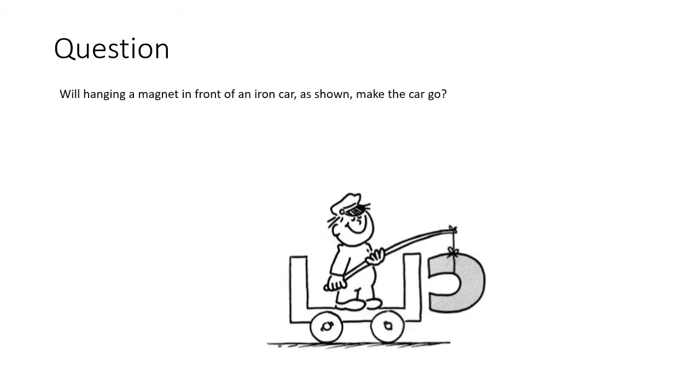Will hanging a magnet in front of an iron car, as shown, make the car go? A) Yes, it will. B) It will move if there is no friction. C) It will not go. Now you may pause this video and think what will happen and select your answer before we turn to the next slide. Okay, now let's see.